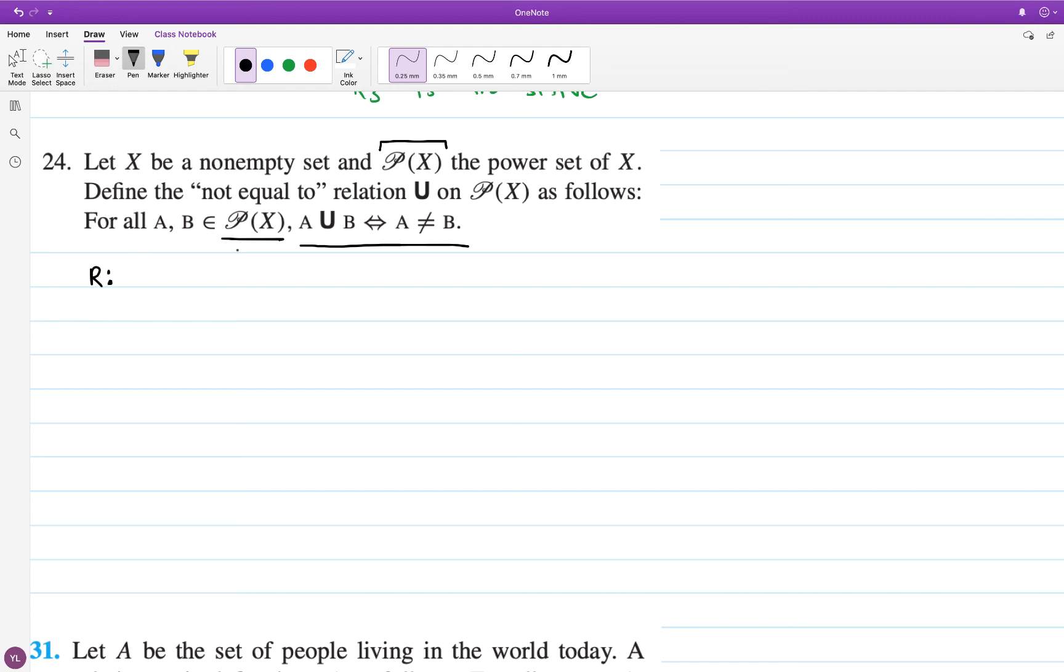Let's check reflexivity. I claim this U relation is not reflexive. Take a specific element of the power set of x. x is definitely not related to itself via this relation because x is not not equal to itself. x is equal to itself. So that's the opposite of being not equal to itself. So U is not reflexive.